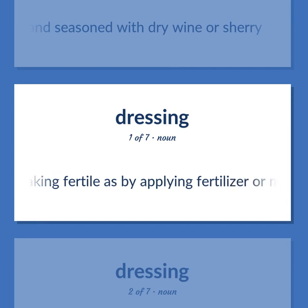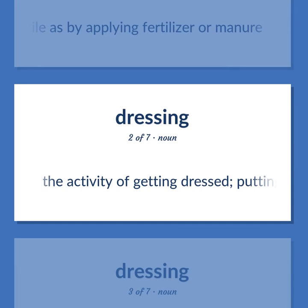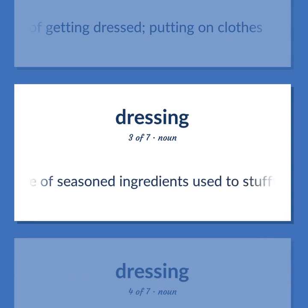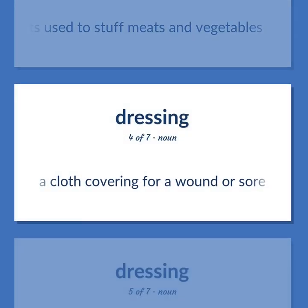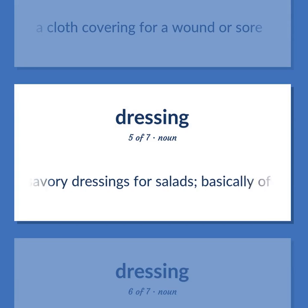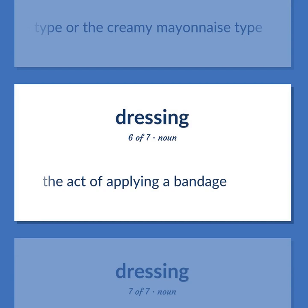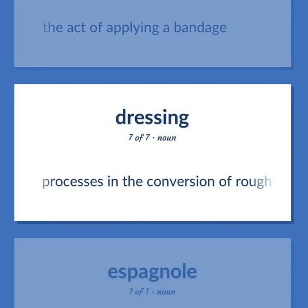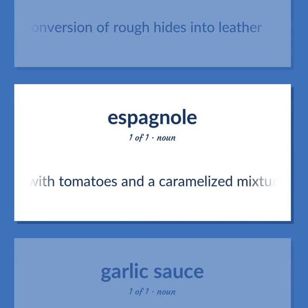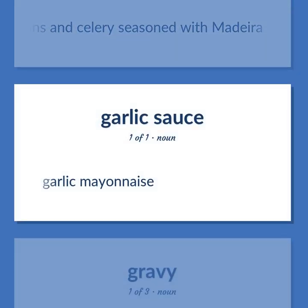Dressing: Making fertile as by applying fertilizer or manure. The activity of getting dressed, putting on clothes. A mixture of seasoned ingredients used to stuff meats and vegetables. A cloth covering for a wound or sore. Savory dressings for salads — basically of two kinds: either the thin French or vinaigrette type, or the creamy mayonnaise type. The act of applying a bandage. Processes in the conversion of rough hides into leather. Brown sauce with tomatoes and a caramelized mixture of minced carrots and onions and celery seasoned with Madeira. Garlic mayonnaise.